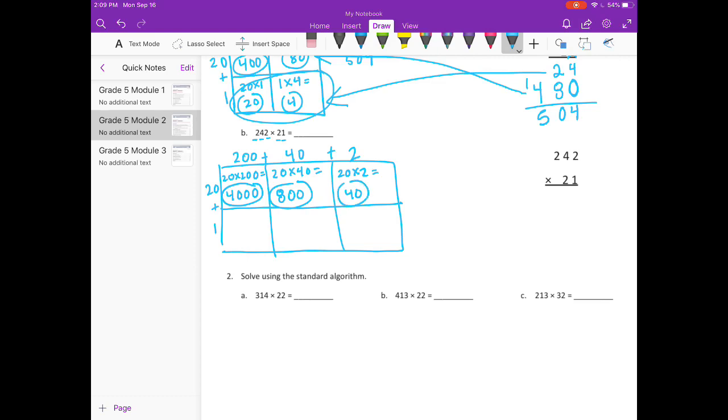Down here, 200 times 1 is 200. And 40 times 1 equals 40. And 2 times 1 equals 2. So if we add all of those together, up here we have these all add up to 4,840.